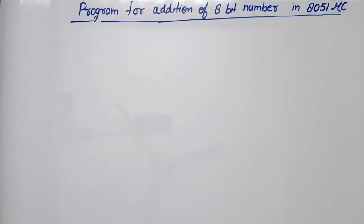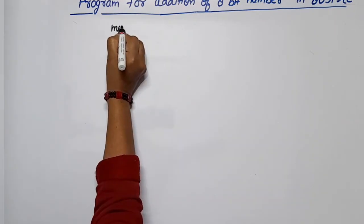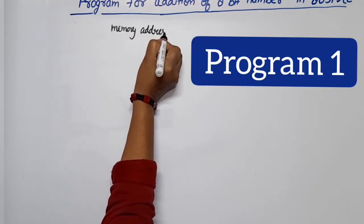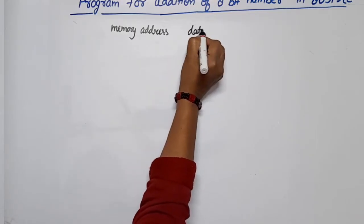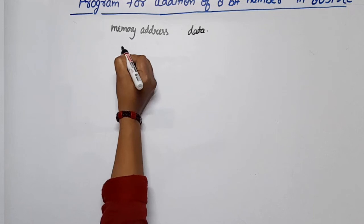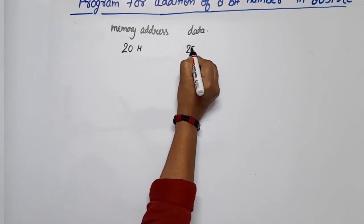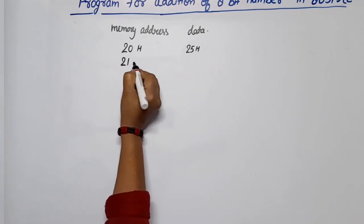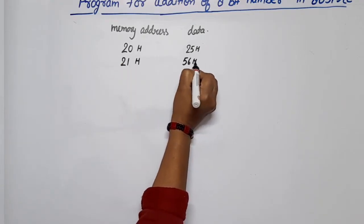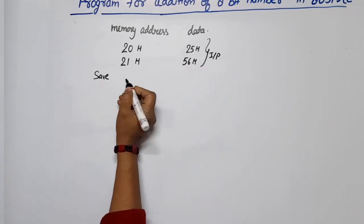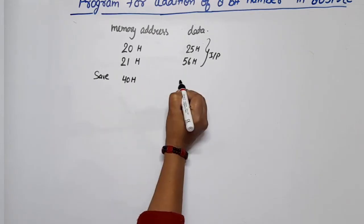Hello everyone, in this video lecture on microcontroller 8051, I am going to discuss a program for addition of two 8-bit numbers. Our input data: the first number is at address 20H with data 25H, and the second number is at address 21H with data 56H. We will save the result at address 40H.